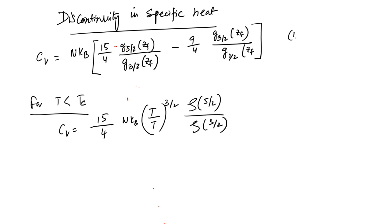Calling this equation 1 and the previous as equation 2: this is the specific heat where we have put Zf equal to 1, substituting all the expressions. The last term, G(1/2) at 1, is infinity so that term drops out, and one has this form with temperature dependence going as T to the power 3/2.